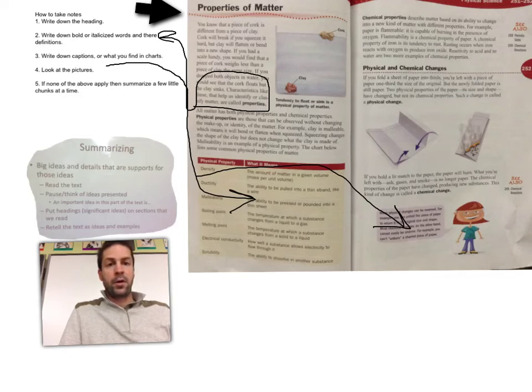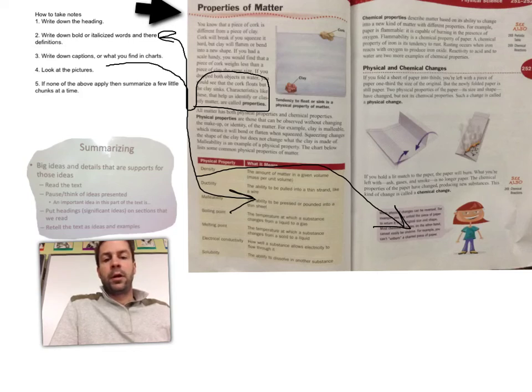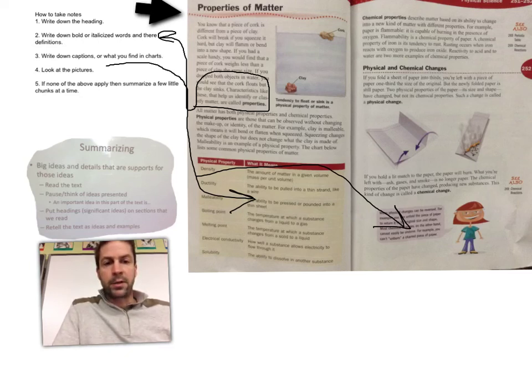And if none of the above apply, if I'm on a page that doesn't have any bold words or italicized words or pictures, then I want to summarize a few little chunks at a time. In summarizing, I want to get the big ideas and details that are supports for those ideas. So as I read the text, I'll pause, I'll think of the ideas presented. For example, an important idea in this main part of the text is, and I'll write that down. Or I'll put a heading, significant ideas on sections that we read. Or I can retell the text as ideas and examples.